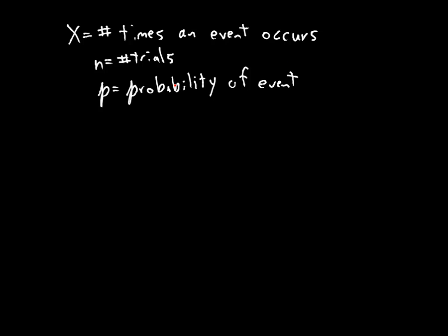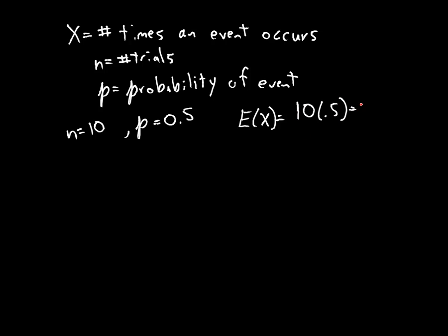So n is the number of trials, p is the probability of an event in a single trial. Suppose, for example, that n were 10 and p were 0.5. So we have 10 trials and in each trial the event happens with probability 0.5, or 50%. Well, if the event occurs about 50% of the time and we have 10 trials, then we'd expect to see 10 times 50%, which is 5.